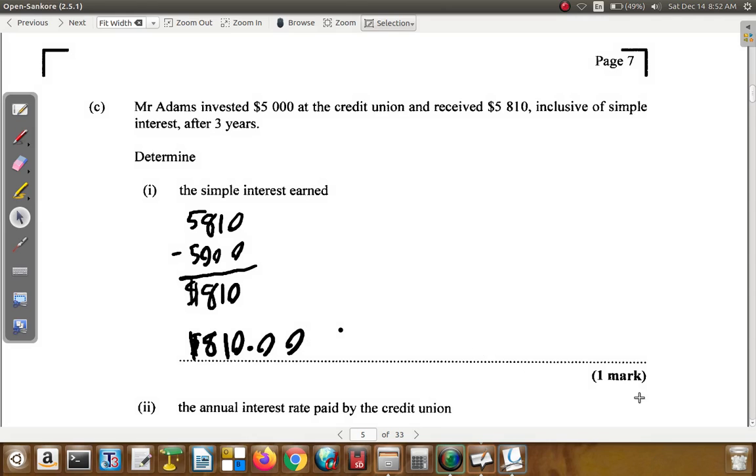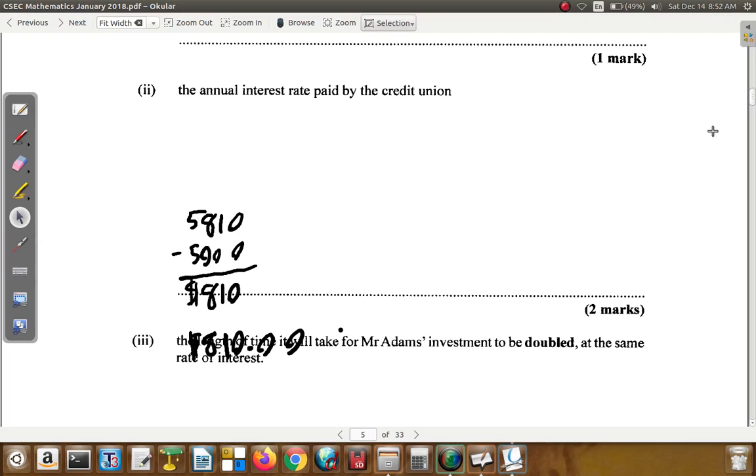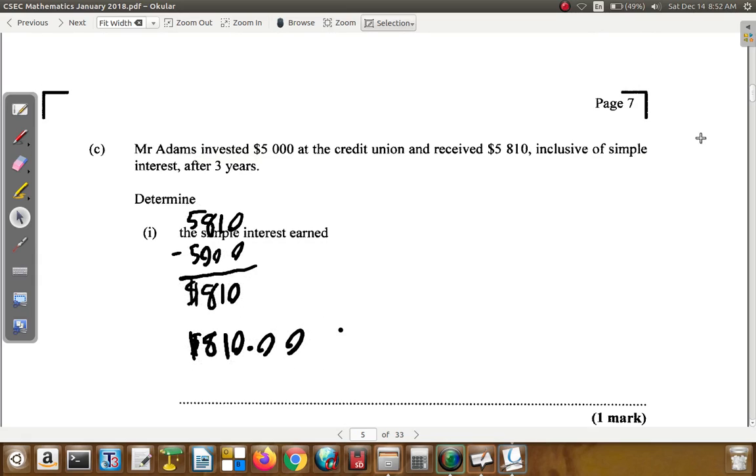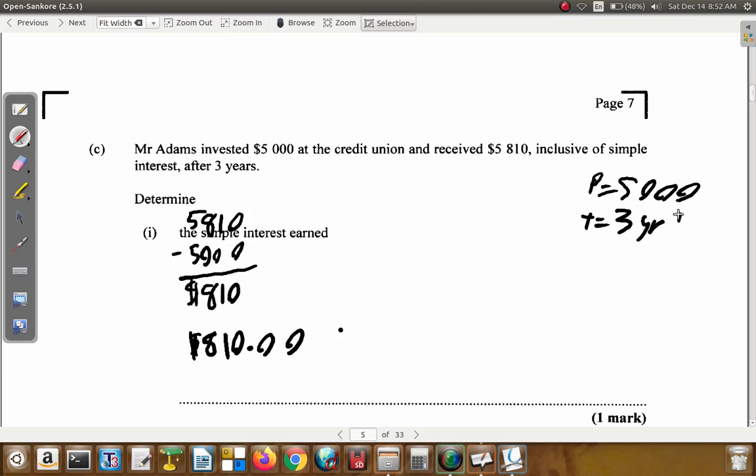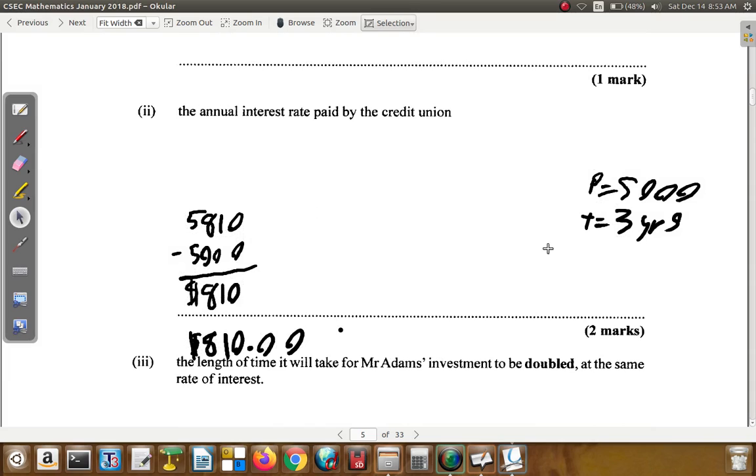Now the annual interest rate paid by the credit union. Remember we have in this case a principal amount invested of $5,000. The time is three years and you got back $5,810. First of all, we're going to be calculating the interest rate paid by the credit union.